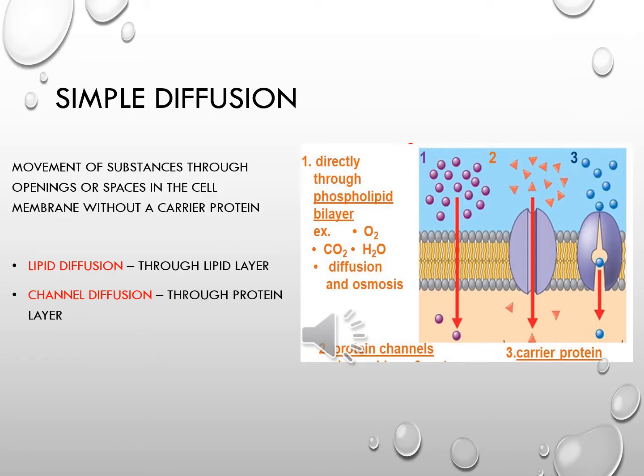The movement of substances through openings in the cell membrane without the help of a carrier protein is simple diffusion. This simple diffusion can occur through a lipid layer or a protein layer. Thus simple diffusion can be a lipid diffusion or a channel diffusion.